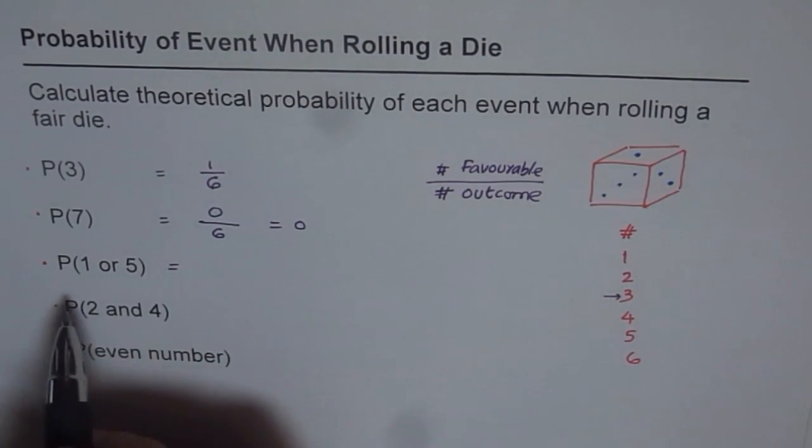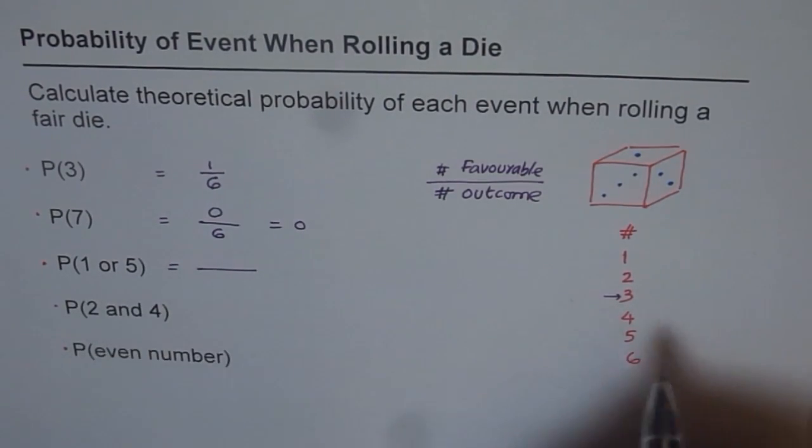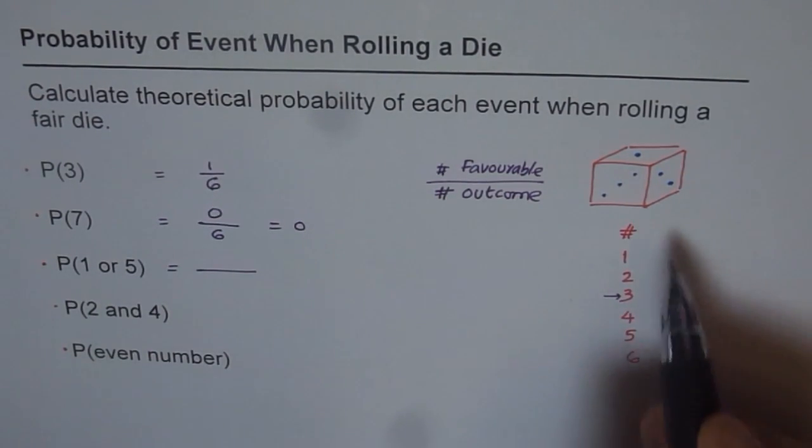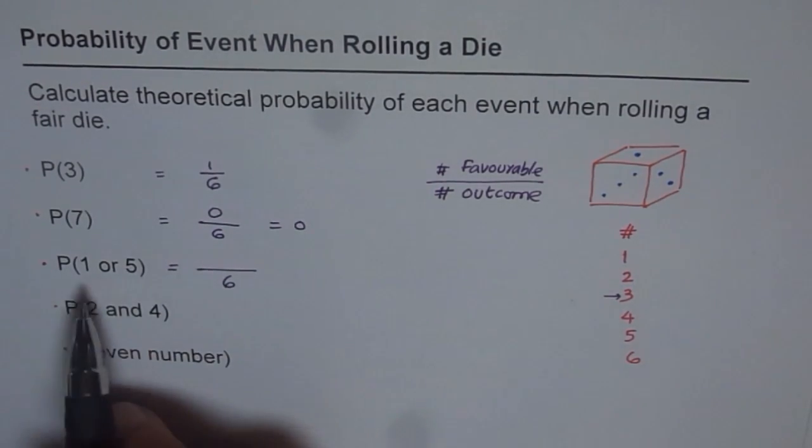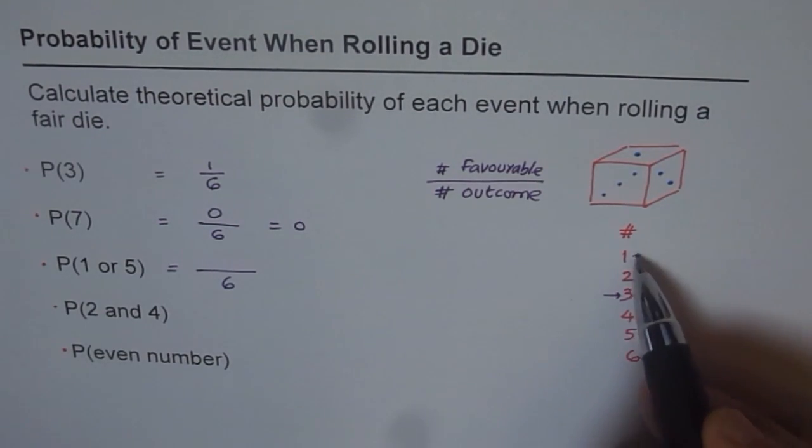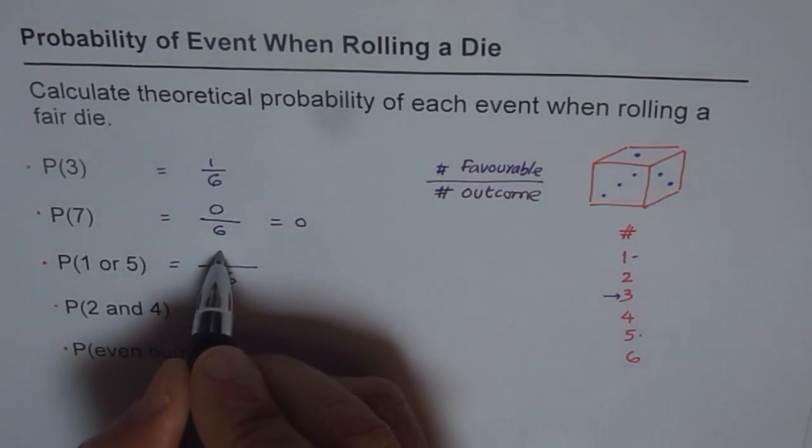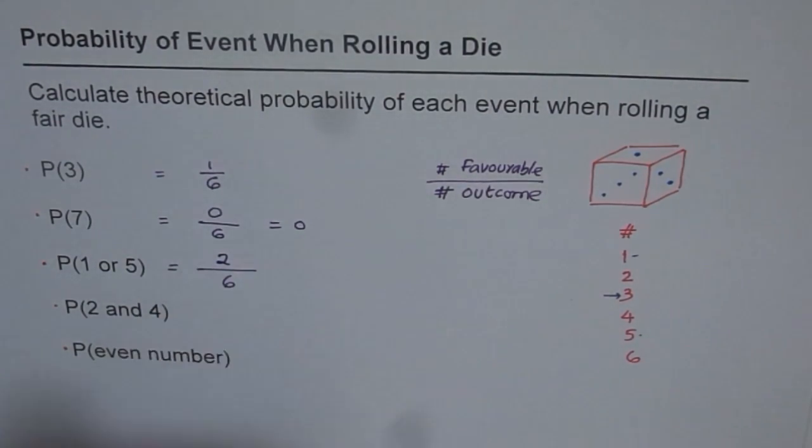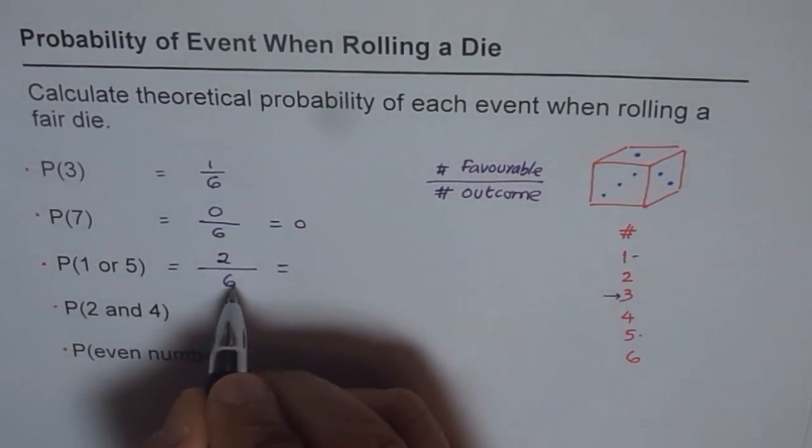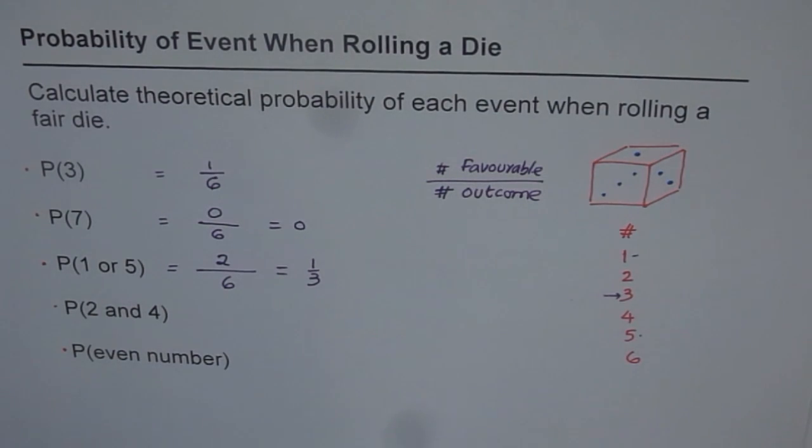Now the next question is, probability of rolling 1 or 5. So in this case, total number of outcomes are same when you are rolling 1 die, which is 6. Now, 1 or 5? 1 or 5. That means 1 or 5. So there are 2 possibilities. So number of favorable options are 2 for us. And therefore, we get 2 over 6. And we could reduce this and write 1 over 3 as our answer. So these probabilities, which I am writing at present, they are in fractions. You could write them in percent or in decimals also.